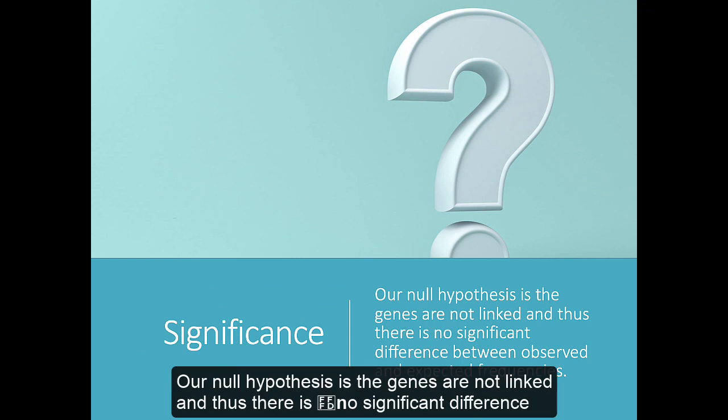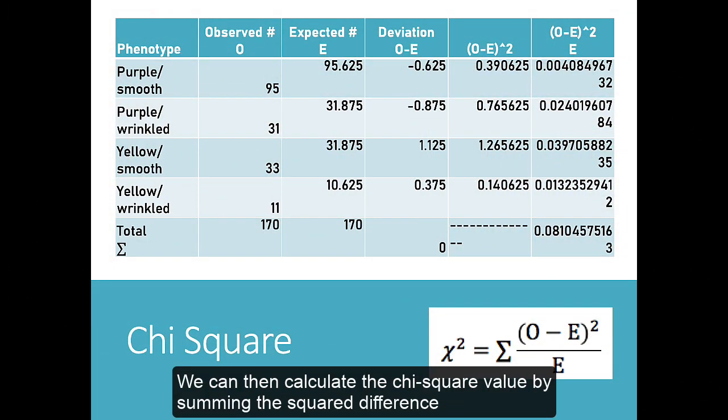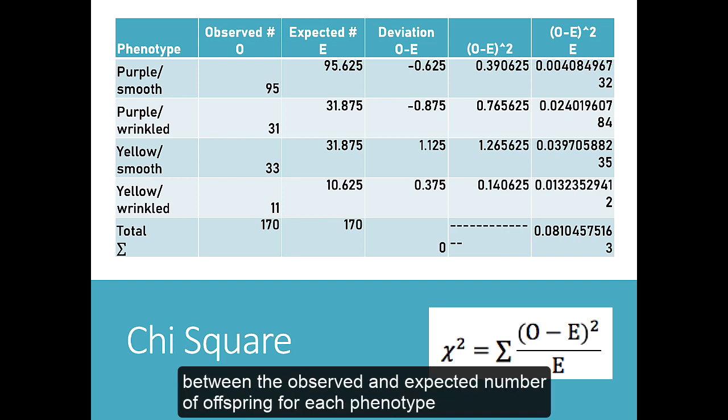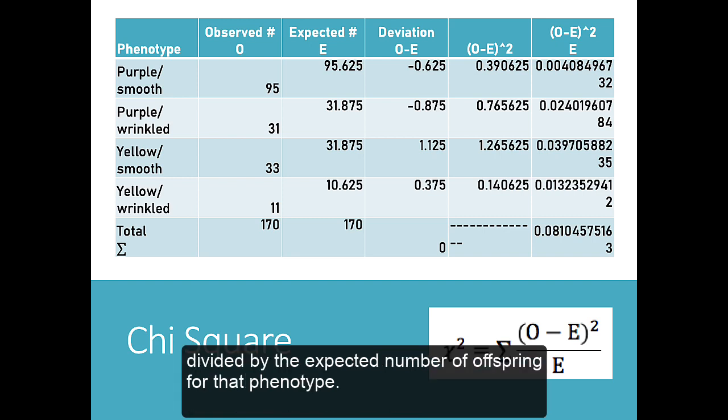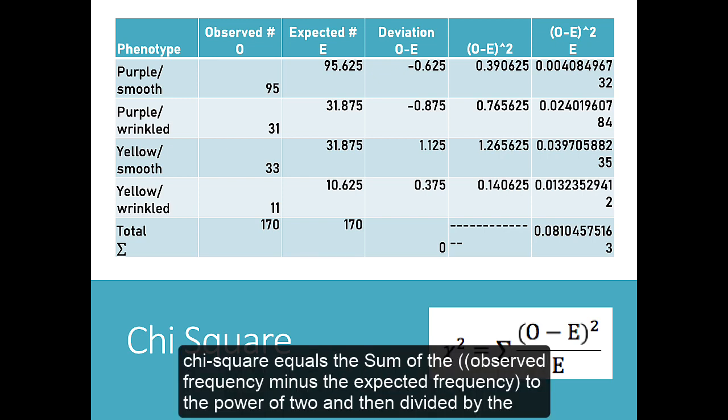Our null hypothesis is that genes are not linked and thus there is no significant difference between observed and expected frequencies. We can then calculate the chi-square value by summing the squared difference between the observed and expected number of offspring for each phenotype, divided by the expected number of offspring for that phenotype. That is, chi-square equals the sum of the observed frequency minus the expected frequency to the power of 2 and then divided by the expected frequency.